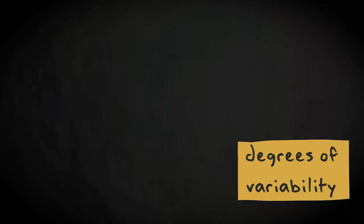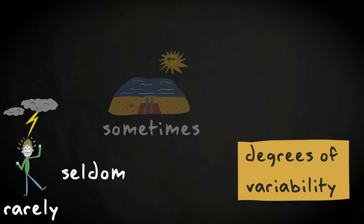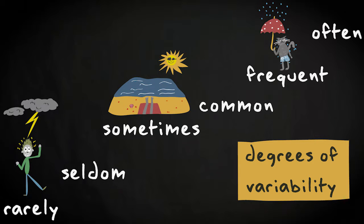Also, degrees of variability and uncertainty can be expressed quite subtly. Consider for example this sequence: rarely, seldom, sometimes, common, frequent, often.